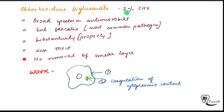Chlorhexidine digluconate is used at 2%. It is a broad-spectrum antimicrobial and mainly works on Enterococcus faecalis, the most common pathogen in root canal. It also has the property of substantivity — meaning sustained availability — it gets absorbed and is released over durations. It is less toxic. However, the main limitation is that it does not remove the smear layer, so it cannot be used alone; it must be used in conjunction with other irrigants.